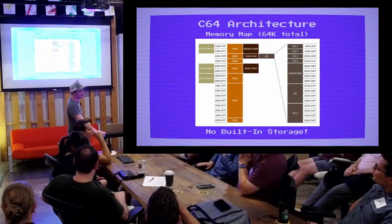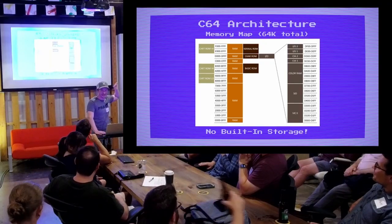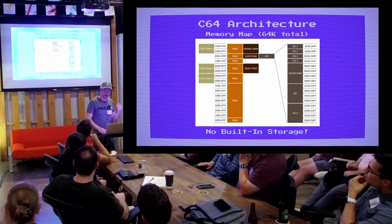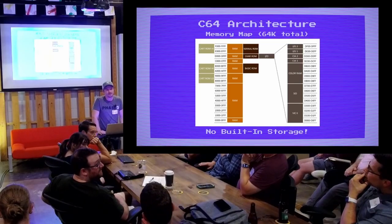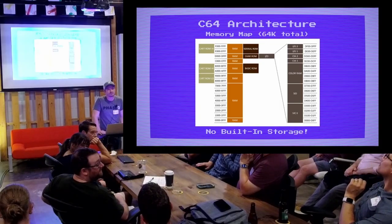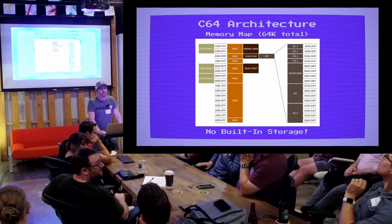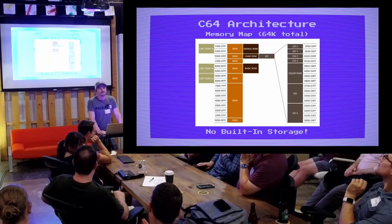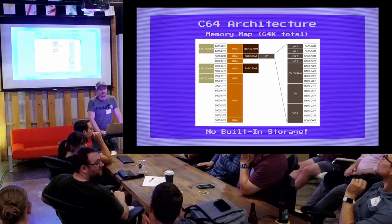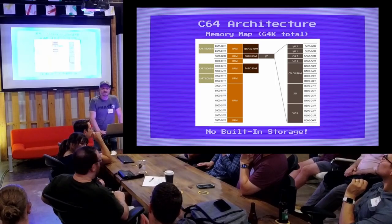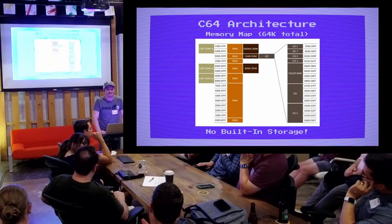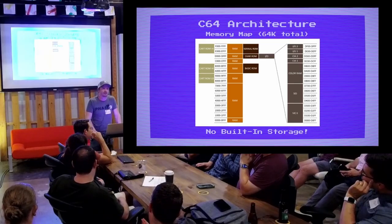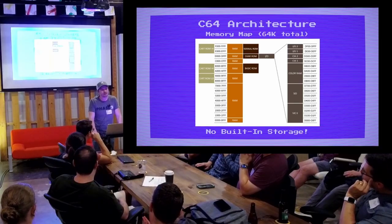We have 64 kilobytes of memory total, and the lower half-ish is what we actually have to work with. Someone asked: to interact with the sound chip, you're writing values to a memory location, and there's a clock notifying the sound chip to act on those values — so to make a sound you put a certain value there, and to turn it off you write zeros or something. That's a really good question that I honestly don't know the answer to; I haven't gotten into sound processing.